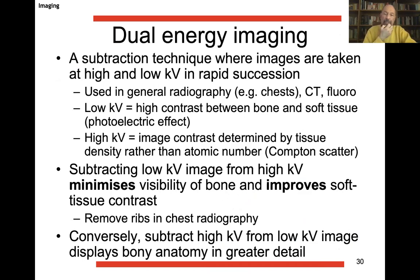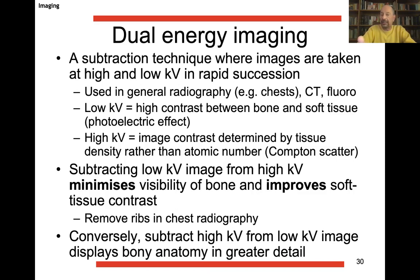Another important innovation in x-ray imaging is dual energy imaging — a subtraction technique where images are taken at high and low kilovolt in rapid succession. Subtracting the low kilovolt image from the high kilovolt image minimizes visibility of bone and improves soft tissue contrast, effectively removing the ribs in chest radiography. Conversely, subtracting high kilovolt from low kilovolt gives bony anatomy in much greater detail, because low kilovolt gives high contrast between bone and tissue via the photoelectric effect, while high kilovolt image is determined by tissue density via the Compton effect.